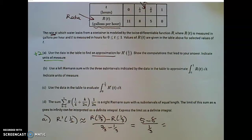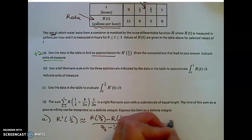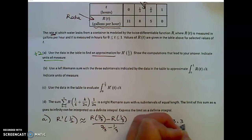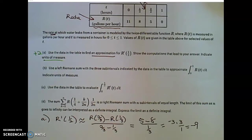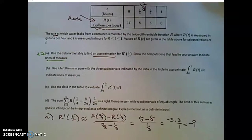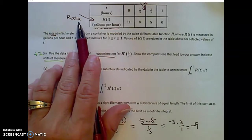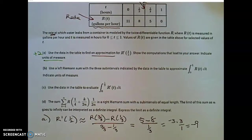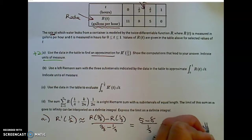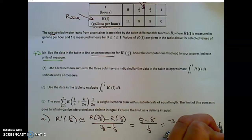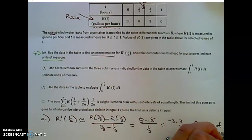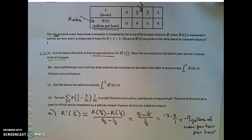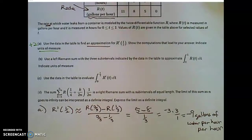You could probably stop there. You don't have to evaluate this, but I'll go further. 5 minus 8, which is negative 3, times the reciprocal of the denominator, which is 3 over 1. And I get negative 9. And you get points for correct units. This represents negative 9 gallons of water per hour, per hour. Negative 9 gallons per hour, per hour.